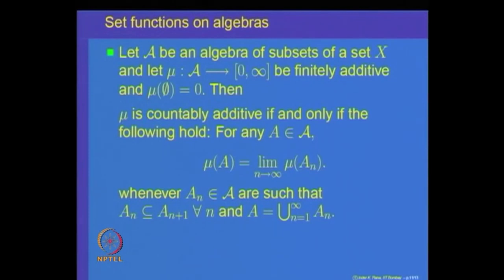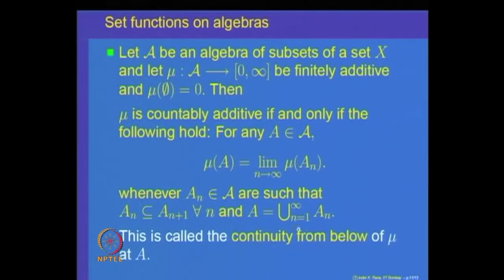We have proved the theorem completely. If A is an algebra of subsets of X and mu is finitely additive with that property, then mu is countably additive if and only if mu(A) equals the limit of mu(A_n) whenever A_n is increasing to A. This characterizes countable additivity in terms of limits of increasing sequences, and we say mu is continuous from below at A.